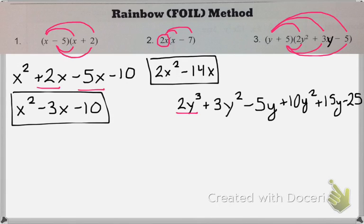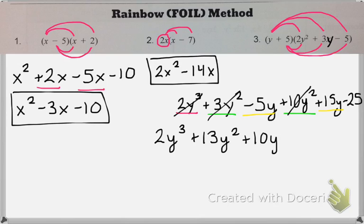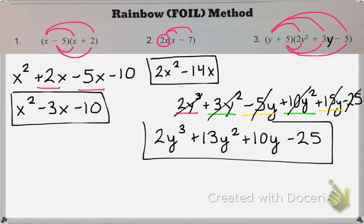So my 2y cubed is all alone, so it stays the same. And I have 3y squared and 10y squared. So that gives me 13y squared. And I have negative 5y and positive 15y, which gives me positive 10y. And then I have that minus 25 at the end. And that is my answer.